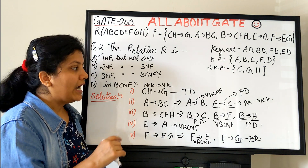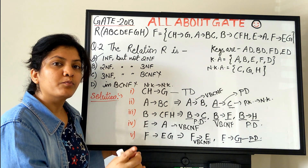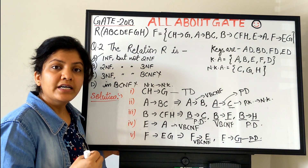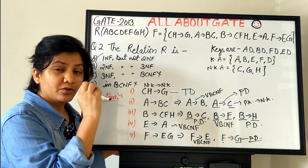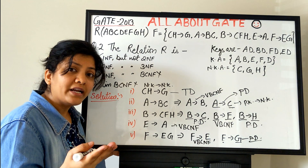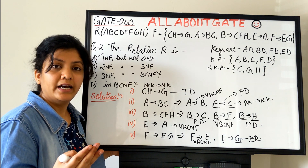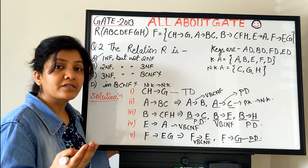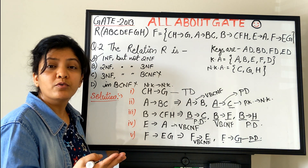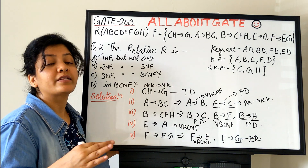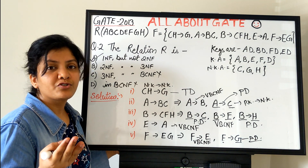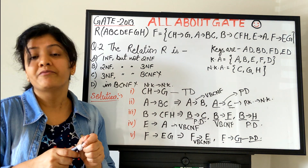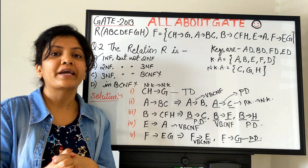I'll stop this question here. As a further exercise, normalize this relation R — which is in the lowest normal form — and find the decomposition set. Check whether it is lossless-join and dependency-preserving for 2NF, 3NF, and BCNF decompositions. I'll come back with another previous year GATE question. See you again, bye bye.